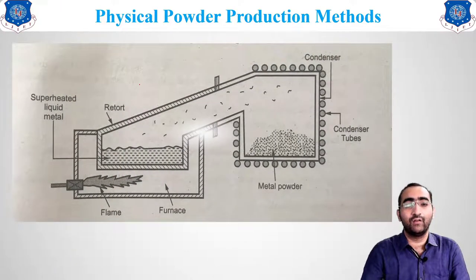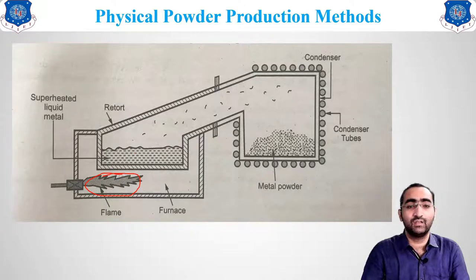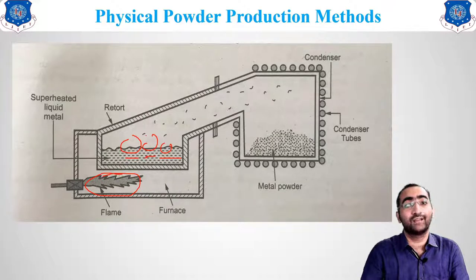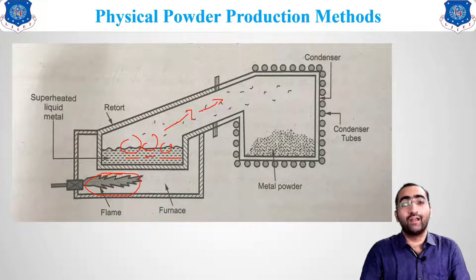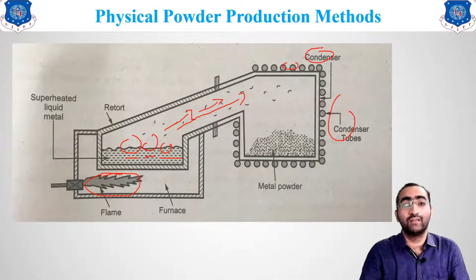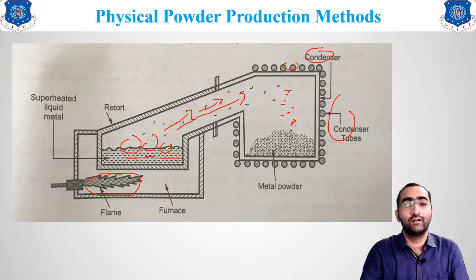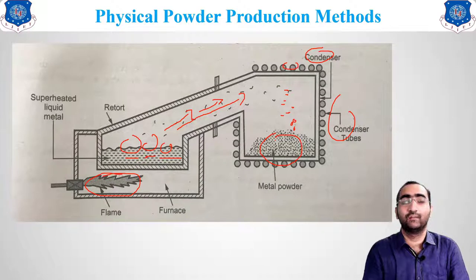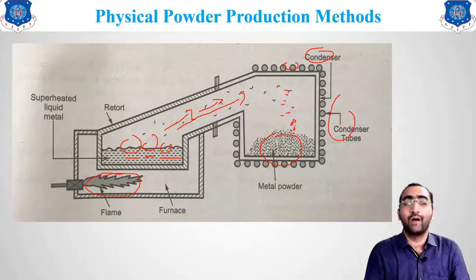Looking at the figure: flame generation causes the metal pieces to convert into liquid form, which then forms gases. These gases move upwards, since gas has a tendency to move wherever space is available. Condensers are placed above, causing a temperature drop, so the vapor falls down as liquid droplets. During the falling and cooling, the material converts into powder, which collects at the bottom. This is how powder is created using the condensation method.